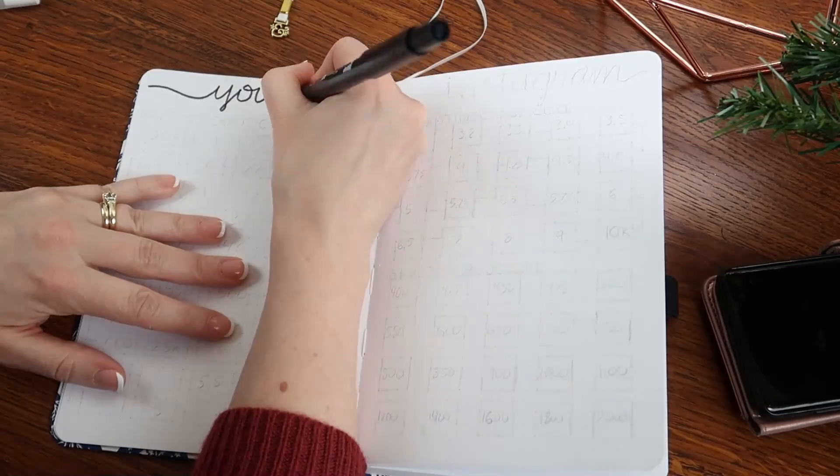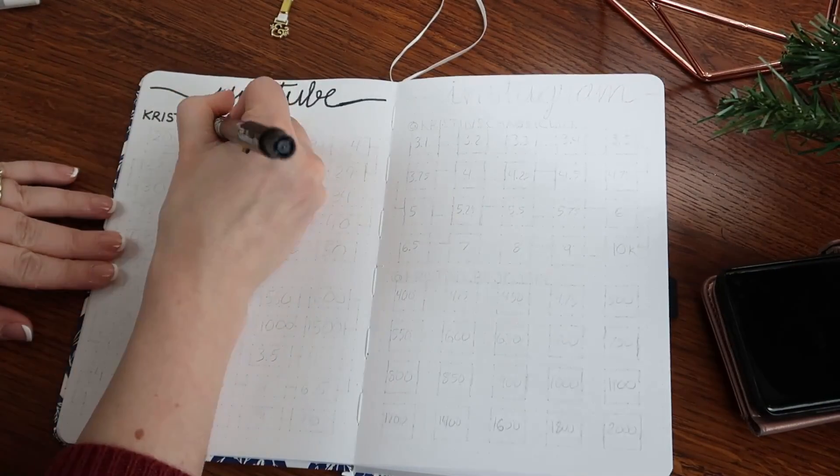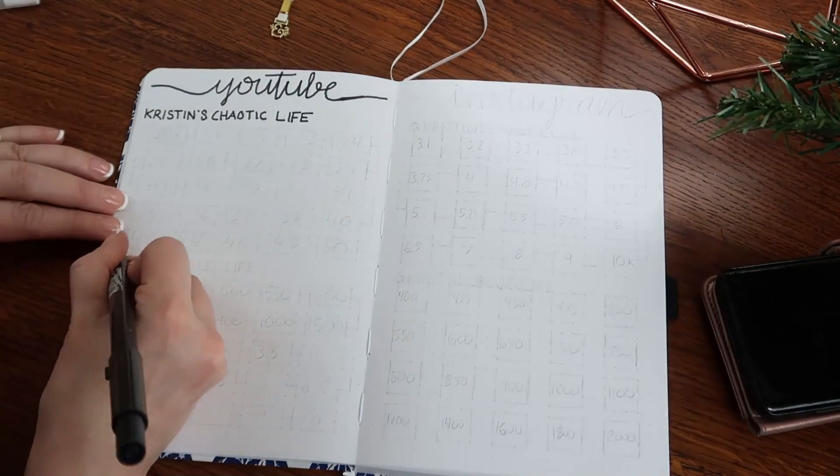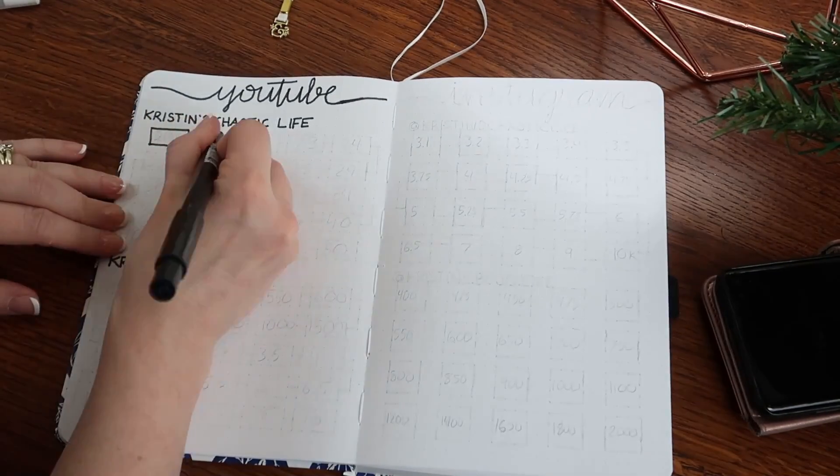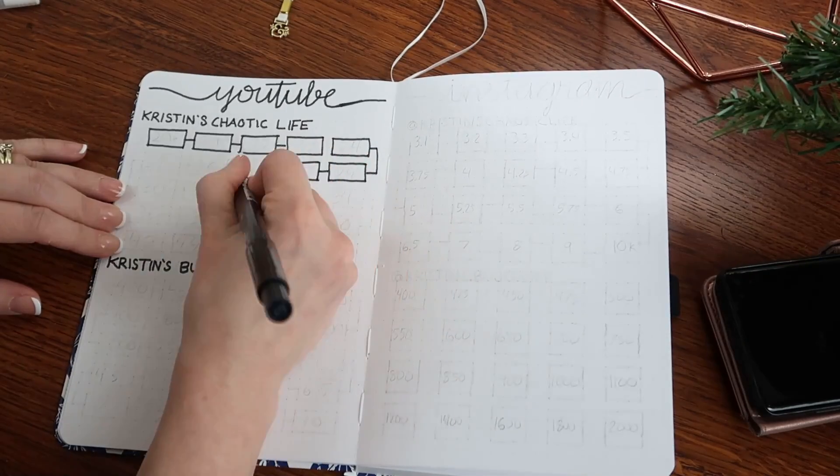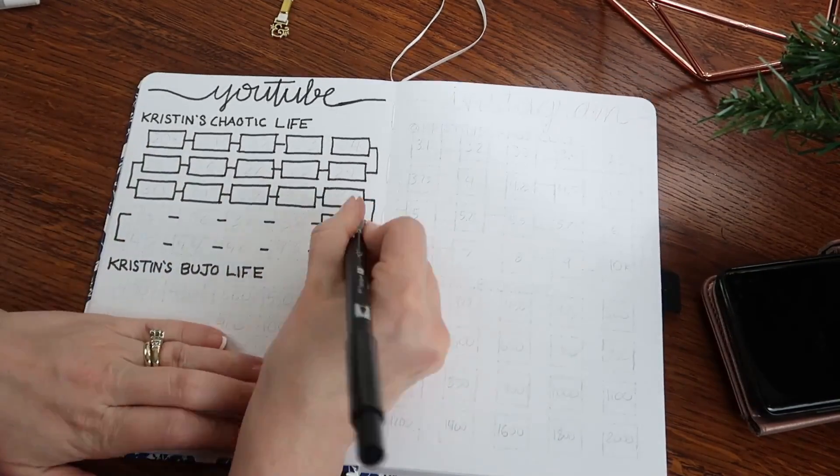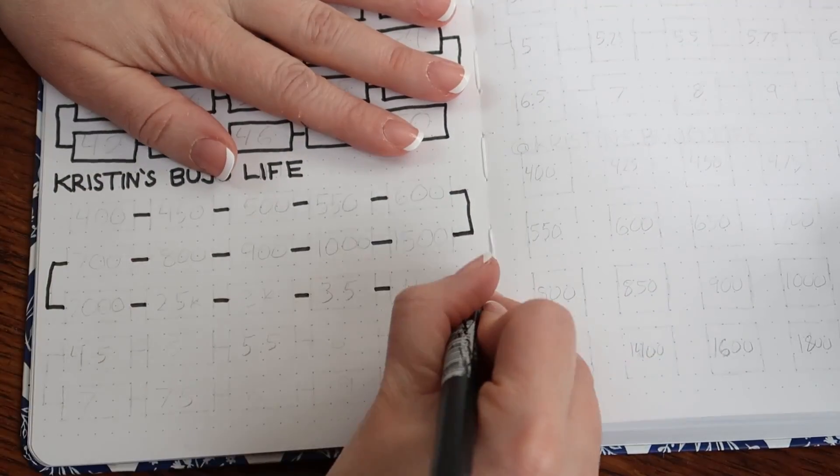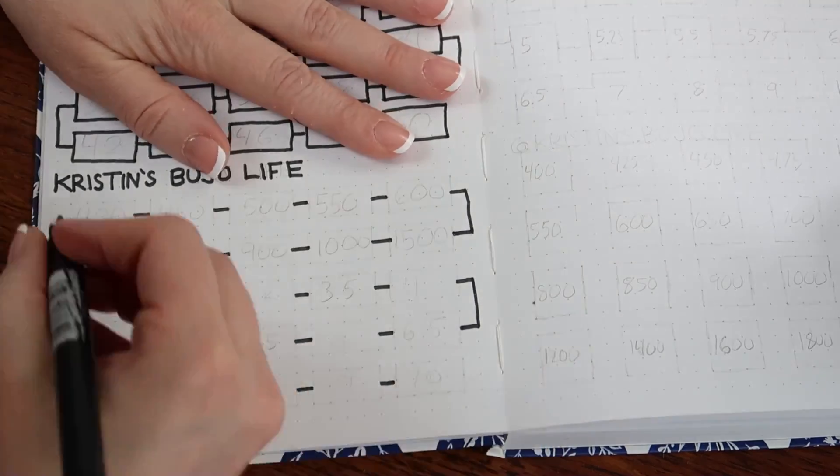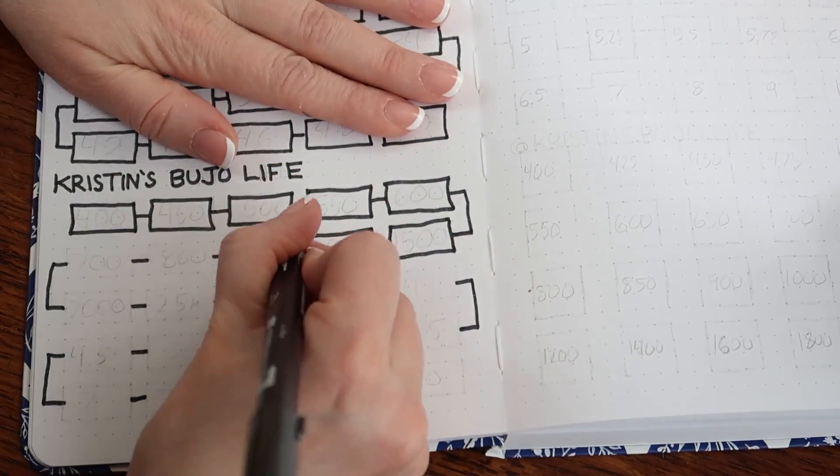So these two pages are trackers of my YouTube and my Instagram. I have two YouTube accounts, which is my main channel, Kristen's Chaotic Life, where I share tons of mom life type motivation like cleaning, organizing, and all of that. Then I have my Kristen's Booju Life, which is where I share all things bullet journal. So I'm going to try to track these and every single time I hit a milestone, I will just color it in.